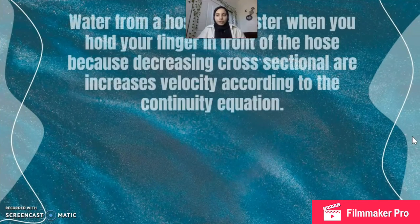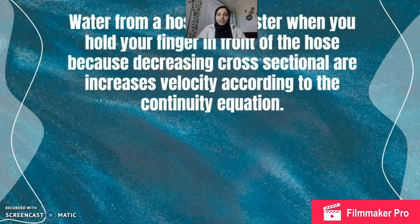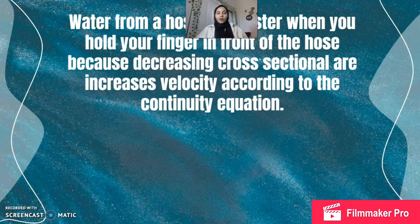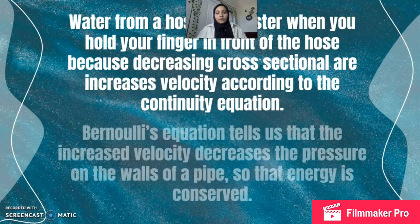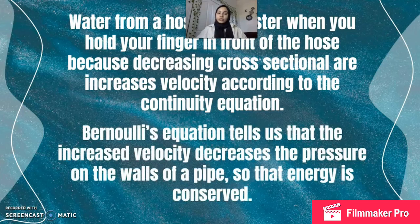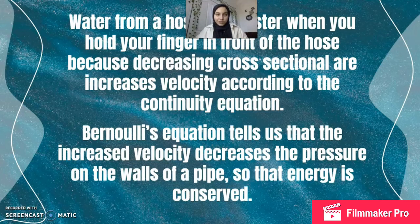To quickly review: we learned that water from a hose flows faster when you hold your finger in front of it because decreasing the cross-sectional area increases velocity according to the continuity equation. We also learned that this relates back to the law of conservation of energy. And Bernoulli's equation tells us that increased velocity decreases the pressure on the walls of a pipe so that energy is conserved. Thank you very much for listening.